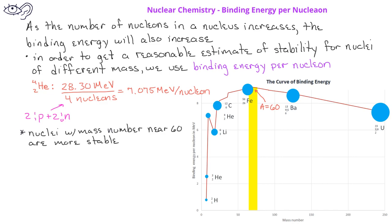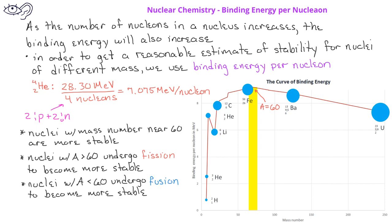When we have a nucleus with a mass number greater than 60, they will tend to undergo fission to become more stable, which releases energy. However, for nuclei with a mass number less than 60, those nuclei tend to undergo fusion to become more stable, and thus releasing energy.